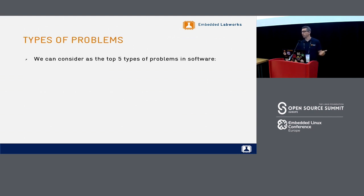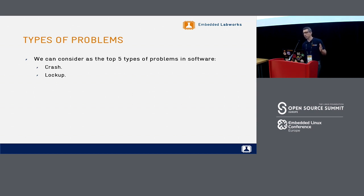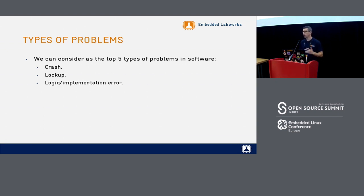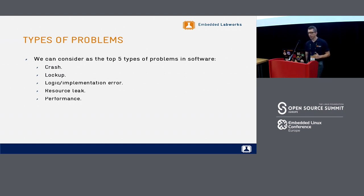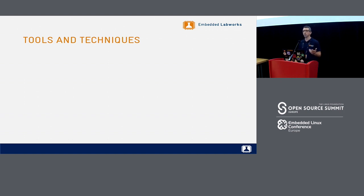There are different kinds of problems in the kernel. We can have crashes — the kernel oops, kernel panic. We can have lockups where the kernel hangs. We can have logic problems where everything is working but the result is not what is expected. We can have resource leaks like memory leaks, file descriptor leaks, or socket leaks. And we can have performance problems like excessive CPU usage.